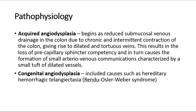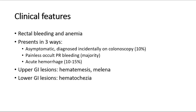Congenital angiodysplasia includes causes such as hereditary hemorrhagic telangiectasia. The main features of angiodysplasia are rectal bleeding and anemia. This typically presents in one of three ways: it can be asymptomatic, where it is only diagnosed incidentally during colonoscopy in around 10% of cases; painless occult PR bleeding in the majority of cases; and acute hemorrhage in 10-15% of cases.